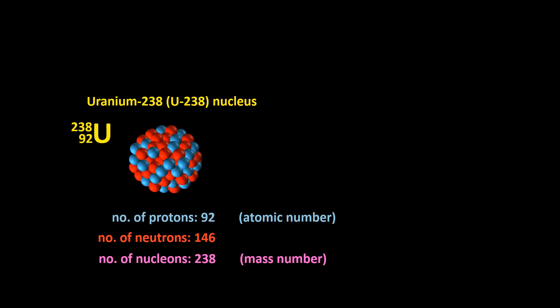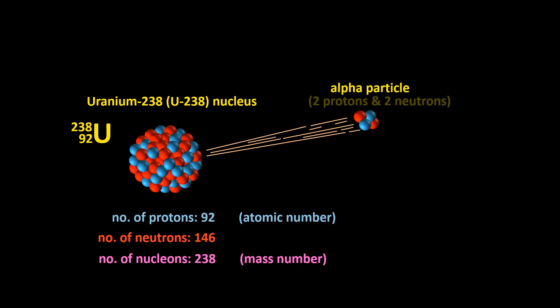This many nucleons is unstable, and so the nucleus emits what's called an alpha particle, which is a group of two protons and two neutrons. It's never some other combination, like two protons and three neutrons—it's always two and two.